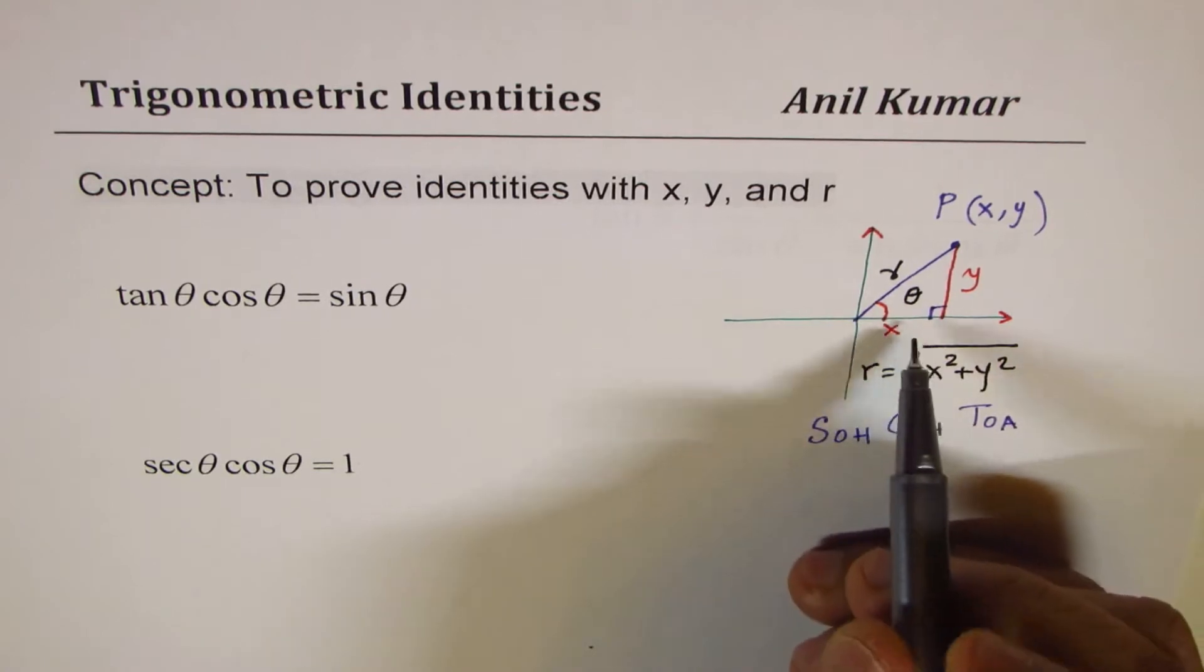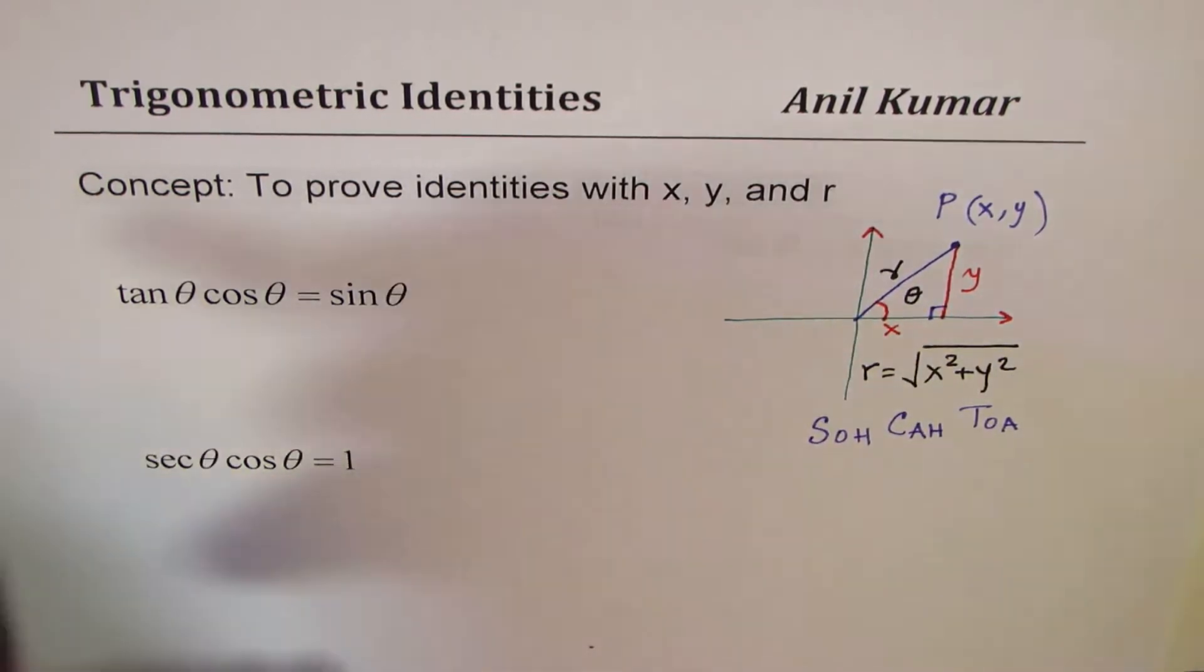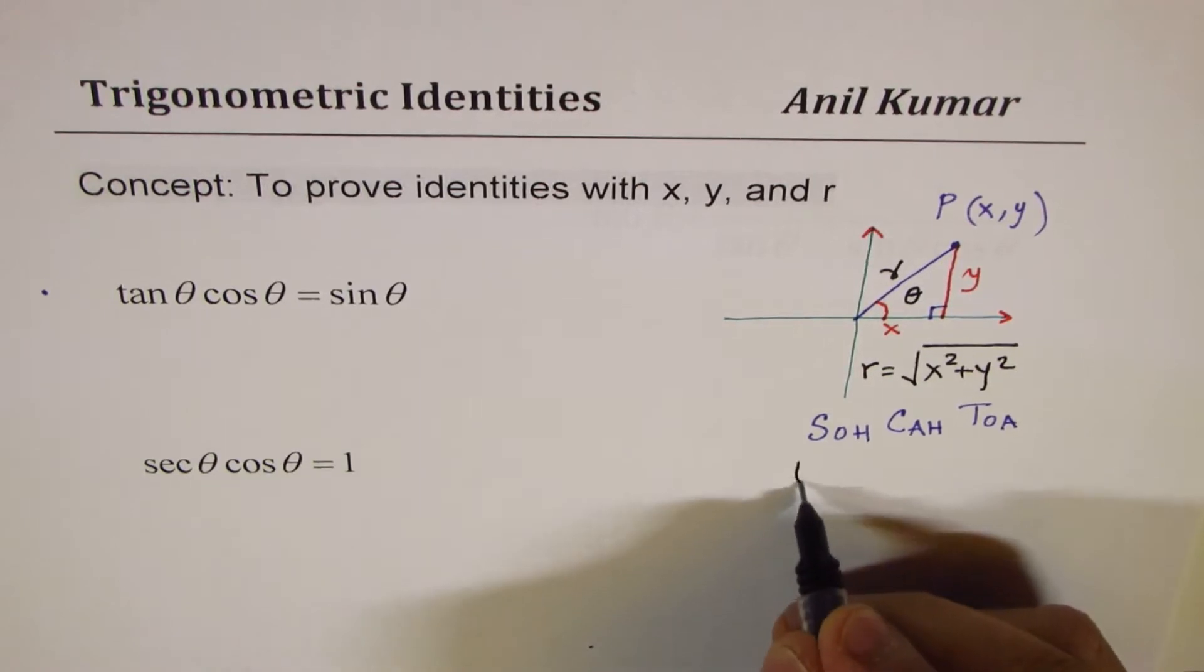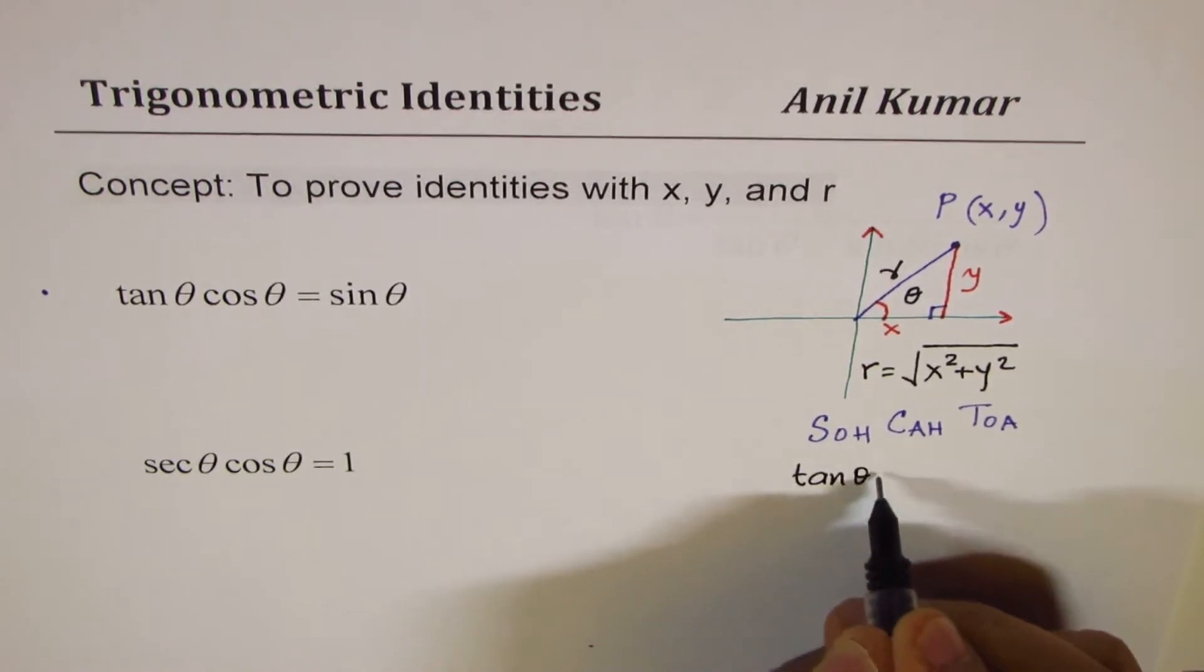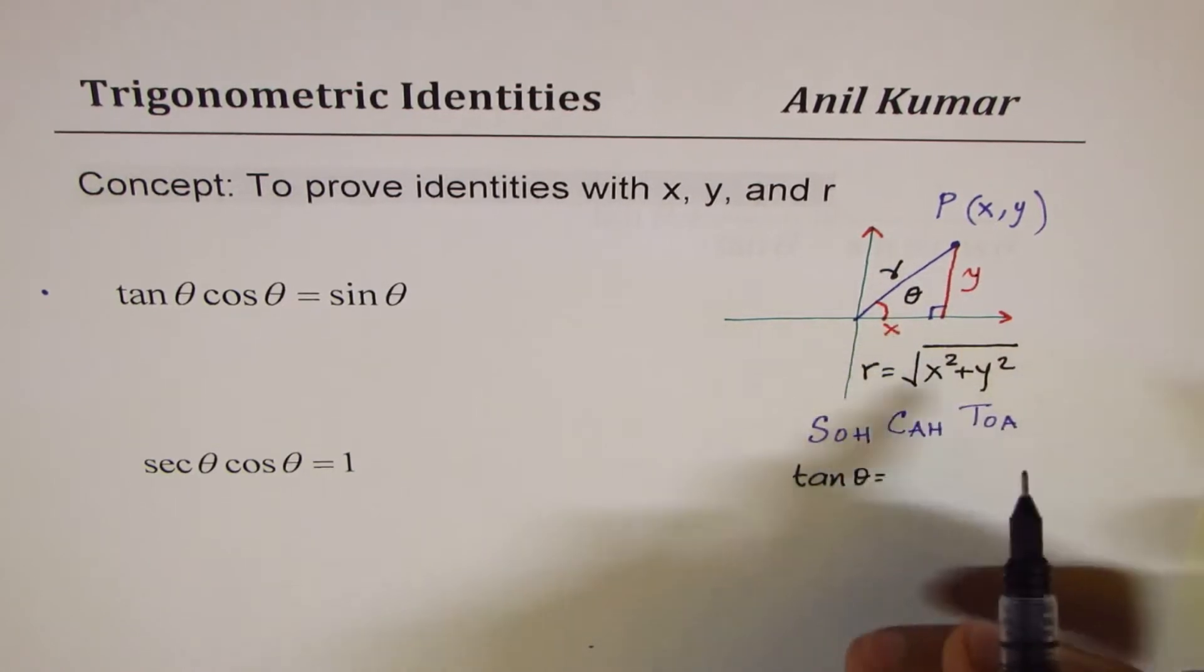So, in our case, if I write tan theta, it means what? Let's begin with the very first one. What is tan theta equals to? Opposite over hypotenuse or opposite over adjacent? Opposite over adjacent, which is y over x.